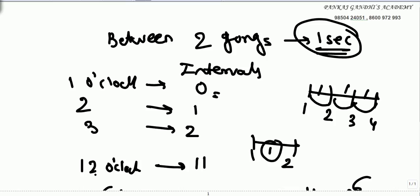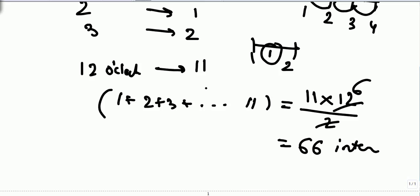So for 12 o'clock, 11 intervals. Now the summation of 1 plus 2 plus 3 is 11 intervals total. 11 into 12 upon 2.